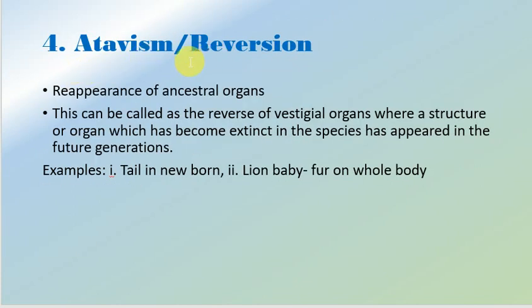The last category under anatomical and morphological evidences is atavism or reversion. Atavism is the reappearance of ancestral organs. These organs were present in our ancestors, then disappeared, but in the rarest of rare cases, they have reappeared in the current era. The process of appearance of ancestral organs after thousands of generations is known as atavism, and it can also be called reversion.